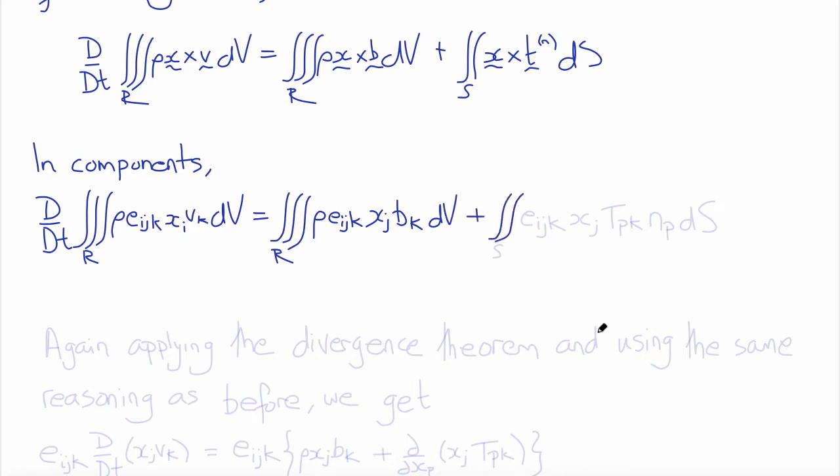is equal to the triple integral over R of Rho times the permutation symbol times XJ, BK integrated with respect to volume plus the surface integral of the permutation symbol times XJ, TnK, integrated with respect to surface.